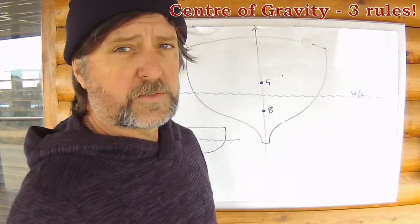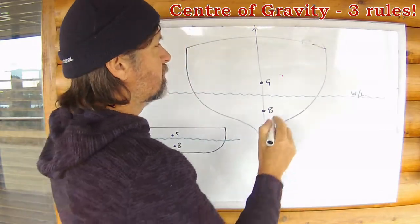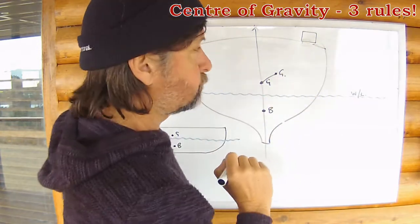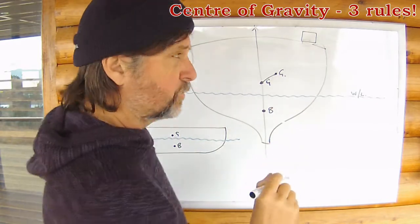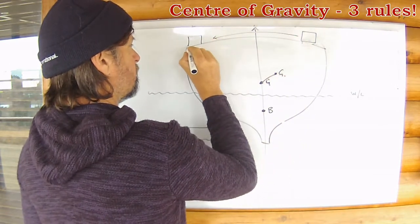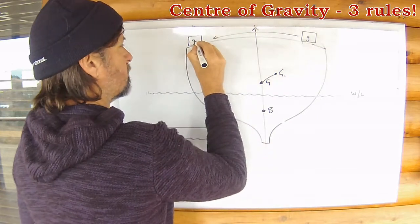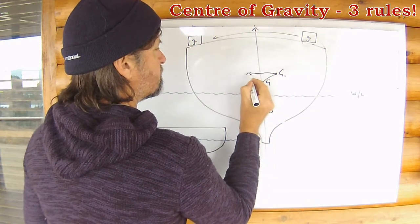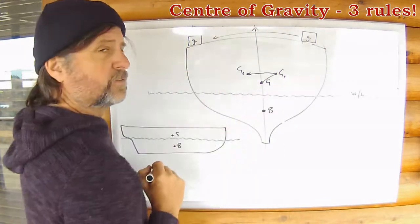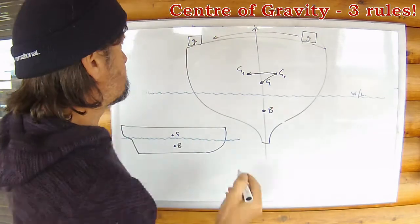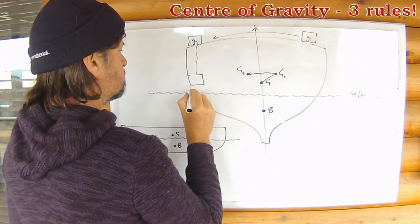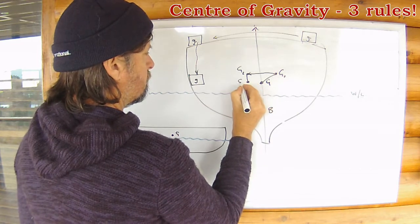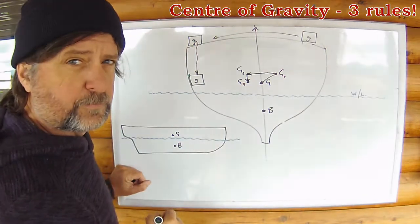Law number three, probably the most misunderstood one in early stages of learning this, is that the centre of gravity will move parallel to a weight shifted. So if we move this weight from one side of the ship to the other — I'll just put a little G in here to indicate that this weight has a centre of gravity as well — G will move parallel and a proportionate distance, G1 to G2, in the same direction as the weight that was shifted. Let's take this weight and stow it down in the hold. G will move proportionately in the same direction.